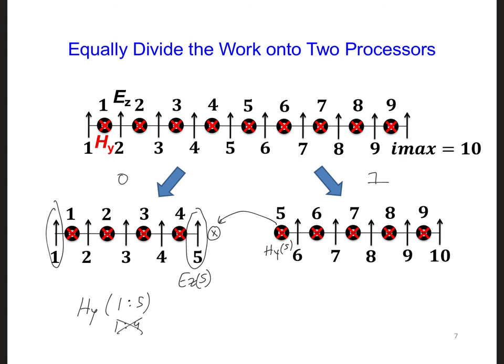The fifth value here of the HY array will be called a ghost cell or a ghost field component, meaning we store that value but we don't update it on processor 0.